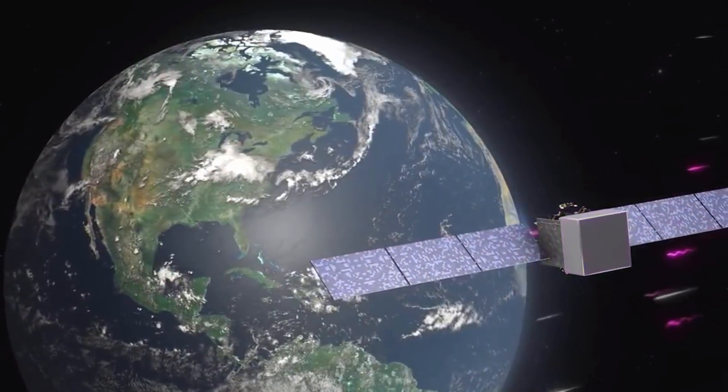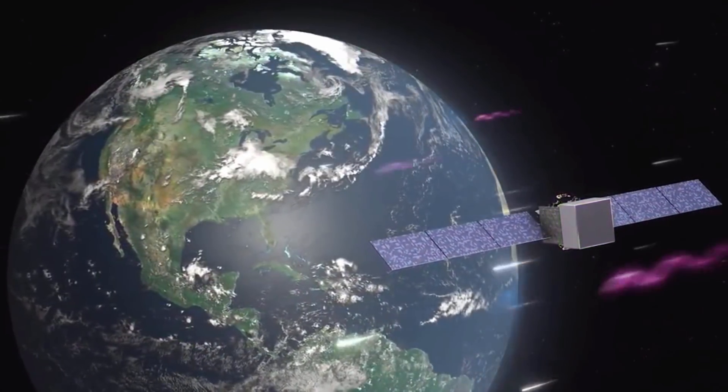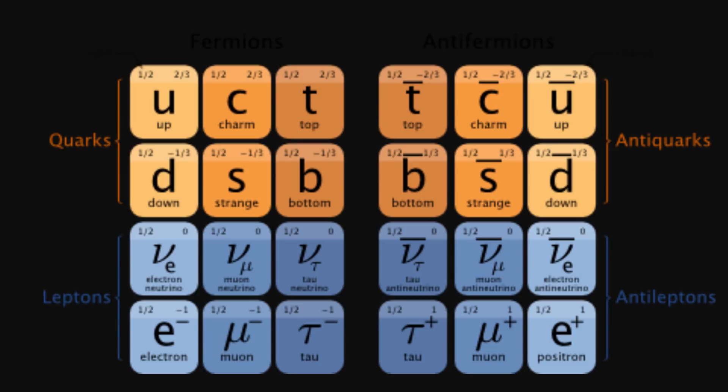But it just so happens that we did detect one in July of 2018. And in case you were wondering what these neutrinos are, they're kind of related to electrons, and there's actually three types of them, or three flavors as they're known in science.